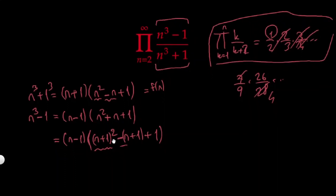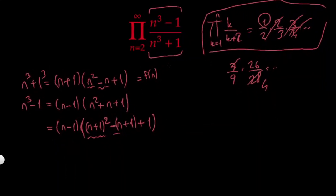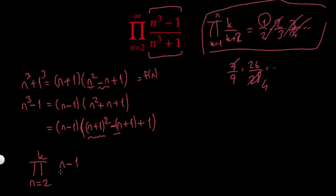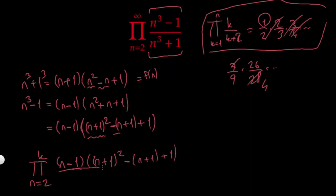So let's call this product P. Instead of multiplying infinitely many terms right away, let's first take the product from n=2 up to k. I can write n³−1 = (n−1)·(n²+n+1) and n³+1 = (n+1)·(n²−n+1). Then I substitute the shifted form: numerator has (n+1)²−(n+1)+1 = n²+n+1, and denominator has n²−n+1.